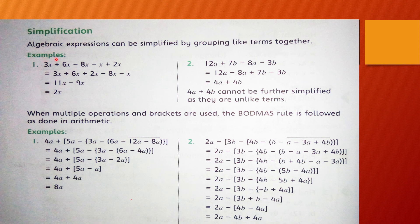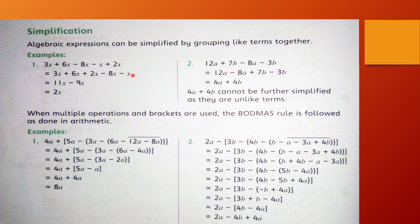The first example: 3x + 6x - 8x - x + 2x. Yeh terms kitni hain? Ek, do, teen, chaar aur paanch — these are five terms. Positive terms kitni hain: 3, aur negative kitni hain: 2. Jo positive hain, woh teeno pehle ikattha karein: 3x + 6x + 2x, phir negative terms mila dein: minus 8x aur minus x.